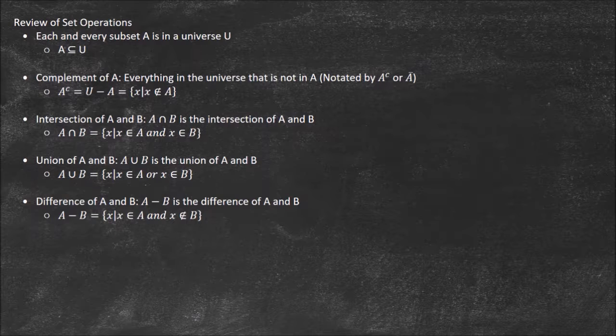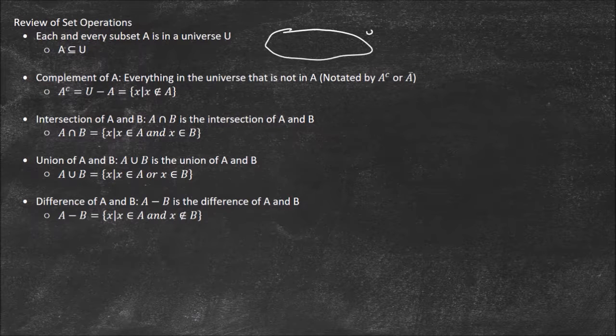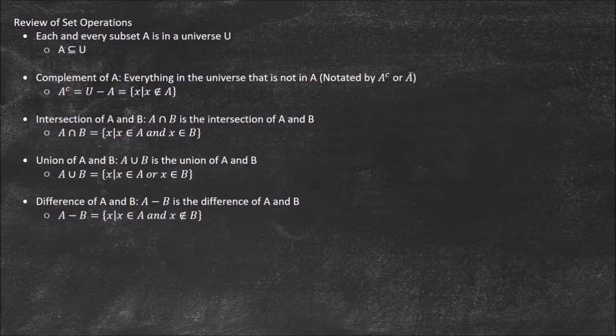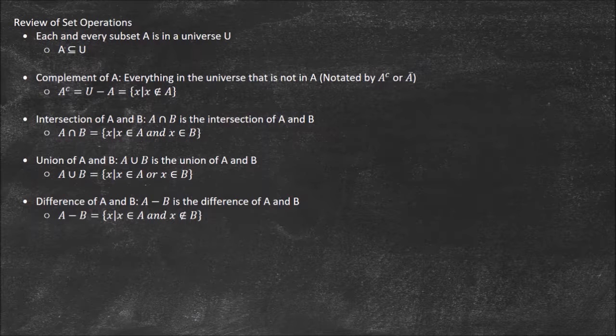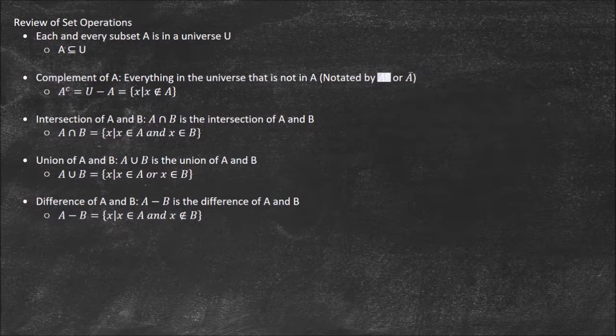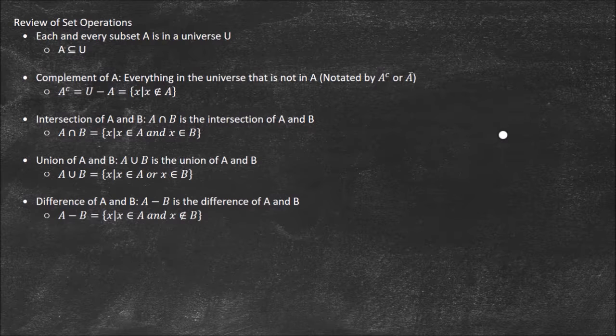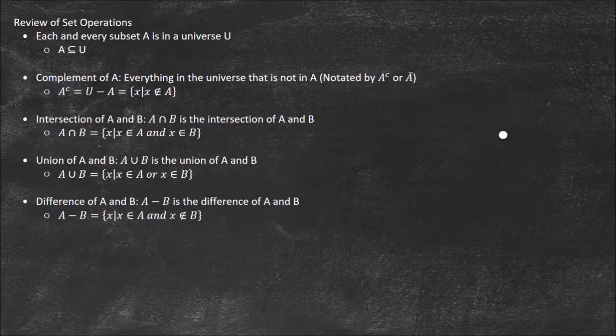So first one, each and every subset A is in a universe U. So we have some bigger thing going on here, that's U, and then inside of it we have our subset A. No matter what the set is, we have to assume that there's this larger body of work around it. So the complement of A, this is everything in the universe that's not in A and it's denoted by the little c. You can read that as A complement or A bar. These are just everything inside of the universe that's not in A. So complement means not in A.